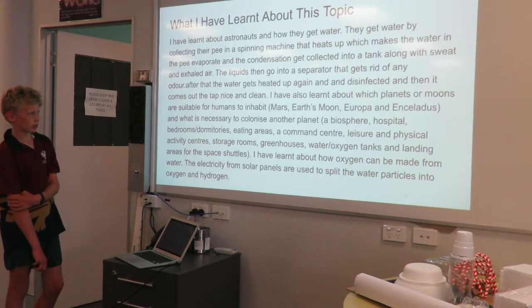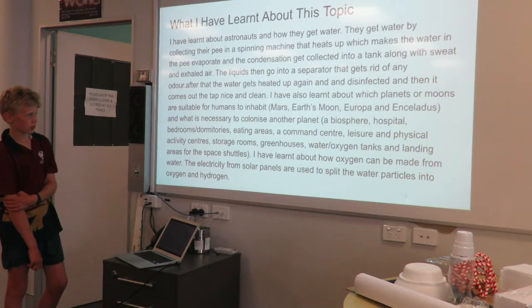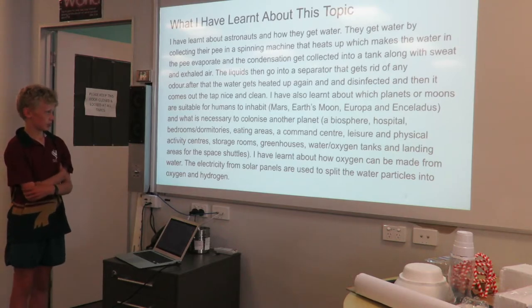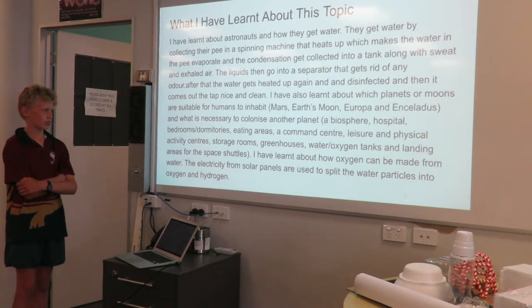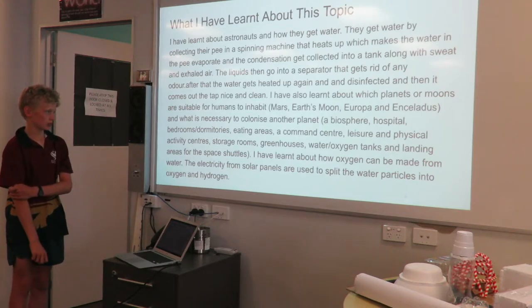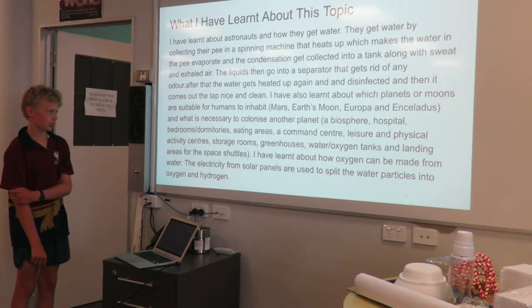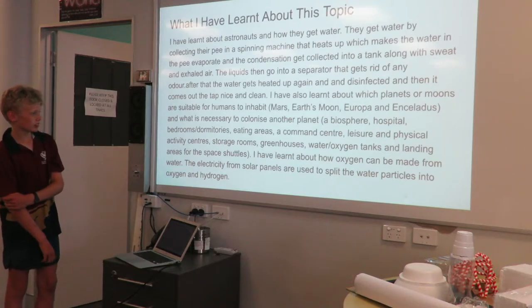I also learnt about which planets or moons are suitable for a human to inhabit: Mars, Earth's Moon, Europa, and Enceladus, and what is necessary to colonise one of the planets. A biosphere, hospital, bedrooms, dormitories, heating areas, command and control centre, physical activity centres, storage rooms, greenhouses, water and oxygen tanks, and landing areas for the spaceships.